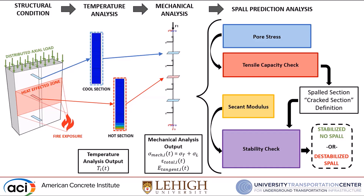Here's what the workflow looks like: we have our initial structural condition, we generate a temperature analysis with time history output, then a mechanical analysis to get what I'll call the mechanical stress — the summation of thermal stress and loading stresses — along with the strain output and tangent modulus. Those histories feed our spall prediction analysis, where we make a generalization for pore stress, evaluate a tensile capacity check to establish what is a spalled or cracked section, and then a stability check to evaluate whether the spalled region is stabilized or destabilizing.